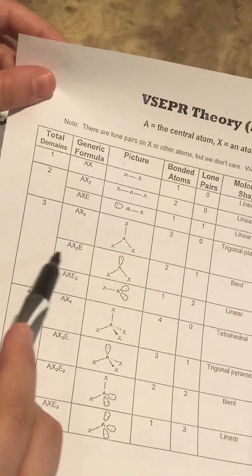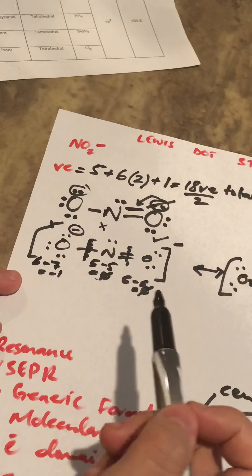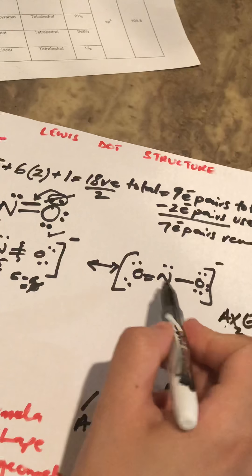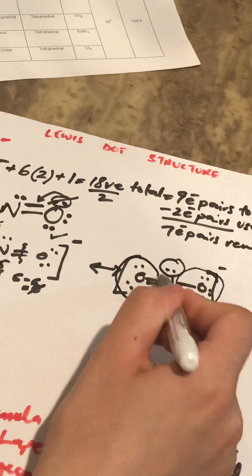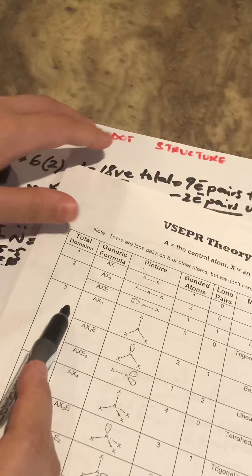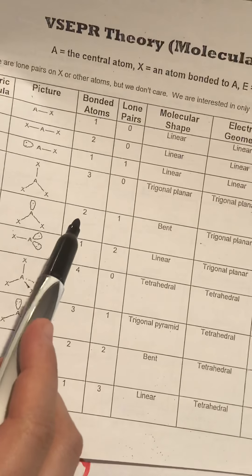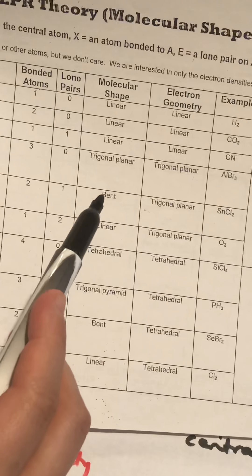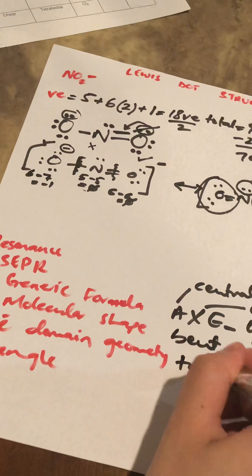Looking up AX₂E₁ in the VSEPR table, it appears in the row with a total domain of three — meaning three things hang off the central atom: two bonded oxygens and one lone pair. The table tells us that with two bonded atoms and one lone pair, the molecular shape is bent and the electron domain geometry is trigonal planar.